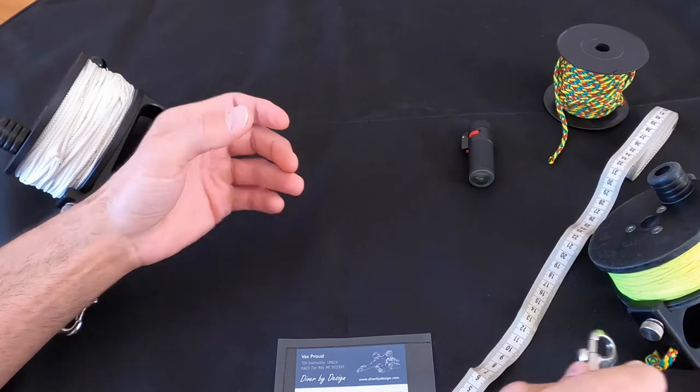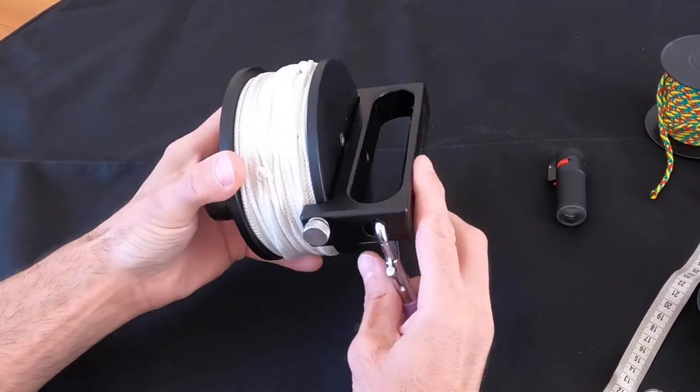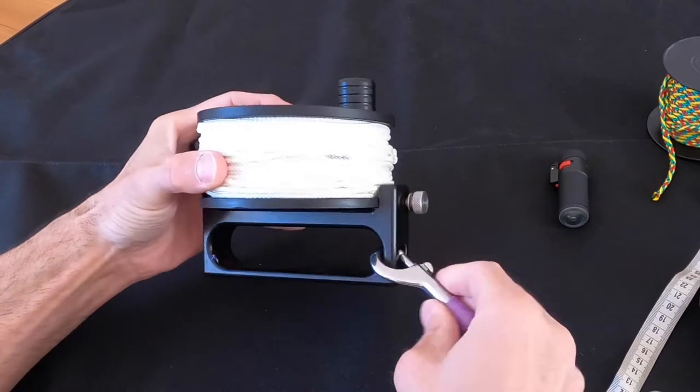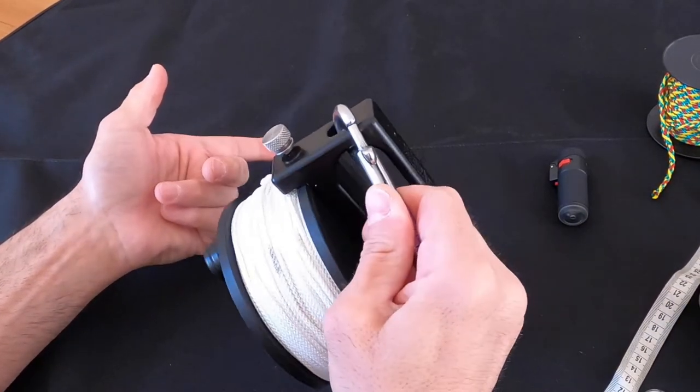So just to illustrate the point, this is the primary reel generally as they come from the factory and what you can see is there is a hole to attach the double ender which is kind of cool.